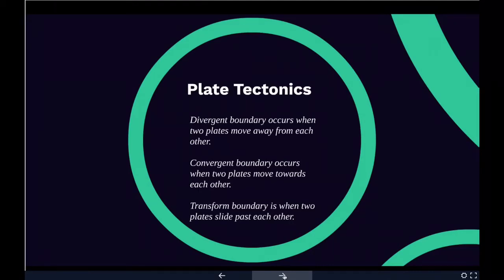Magma formed from melting plates solidifies into granite, a light-colored, low-density rock that makes up the continents. Thus, at convergent boundaries, continental crust made of granite is created and oceanic crust is destroyed. To summarize: a convergent boundary occurs when two plates move towards each other, while a divergent boundary occurs when two plates move away from each other.